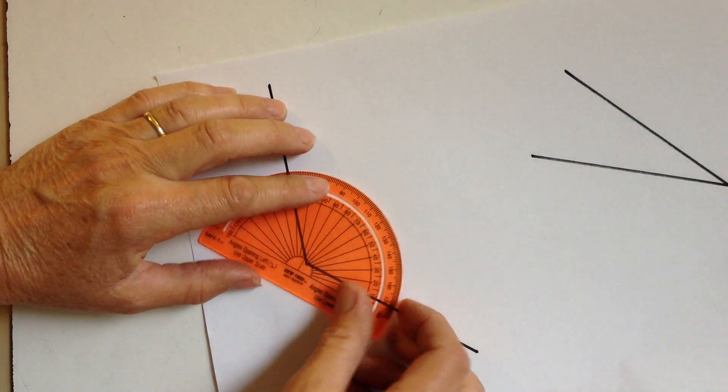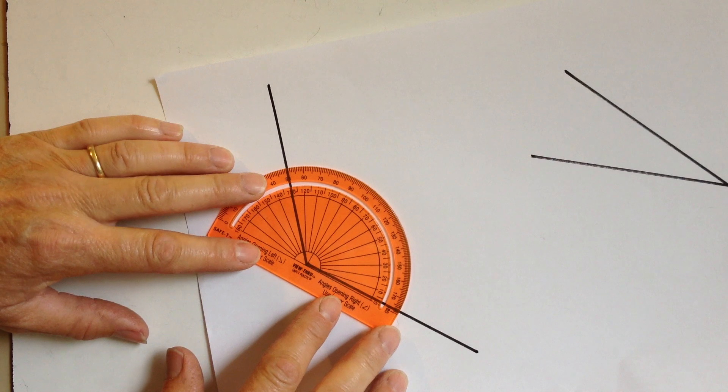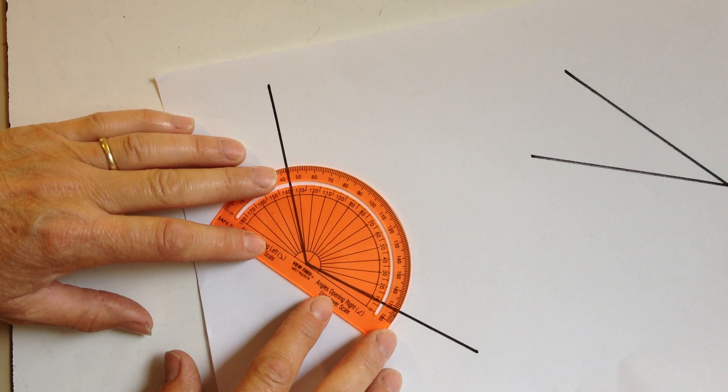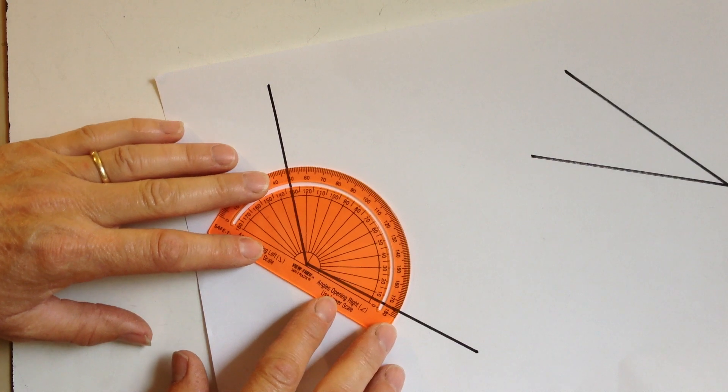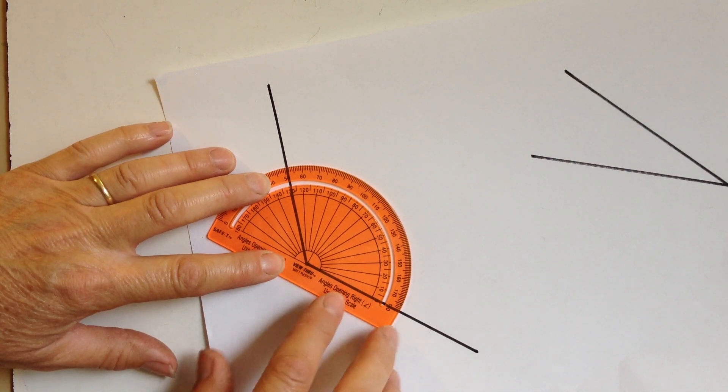So it's laid out like this. I slide the vertex onto the center of the circle and slide my zero up to one of the arms.